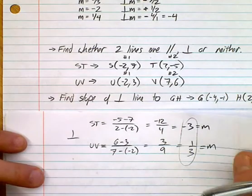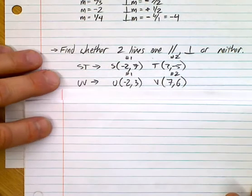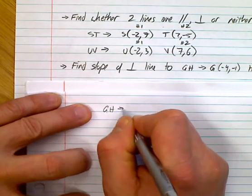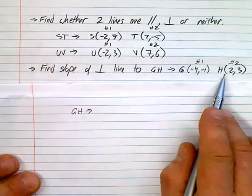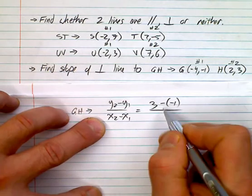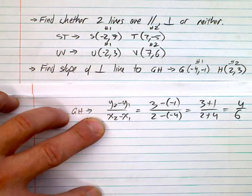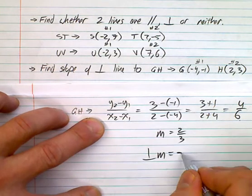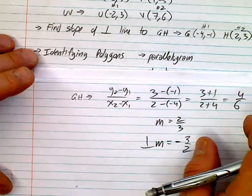Next: find the slope of a perpendicular line to GH. First find the slope of GH. Using the two points — y2 minus y1 over x2 minus x1 — that gives 3 plus 1 over 2 plus 4, which is 4 over 6, so the slope m equals two thirds. Since that's positive, the perpendicular slope is negative, and we flip it: negative three halves. Done.